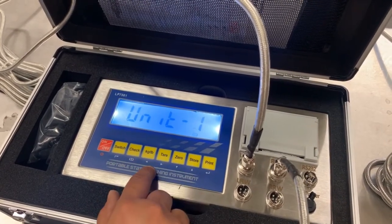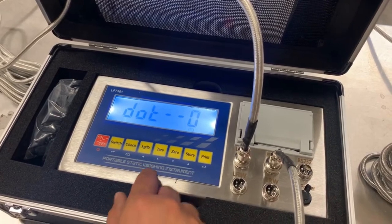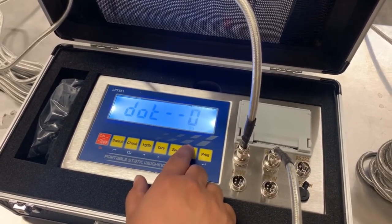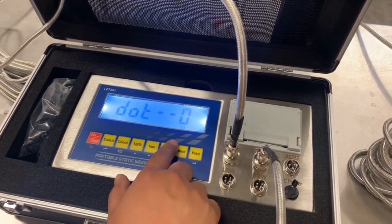This is where you would enter what divisions you want - how many decimal points you want the scale to have. We'll keep it at whole numbers and keep it at zero.